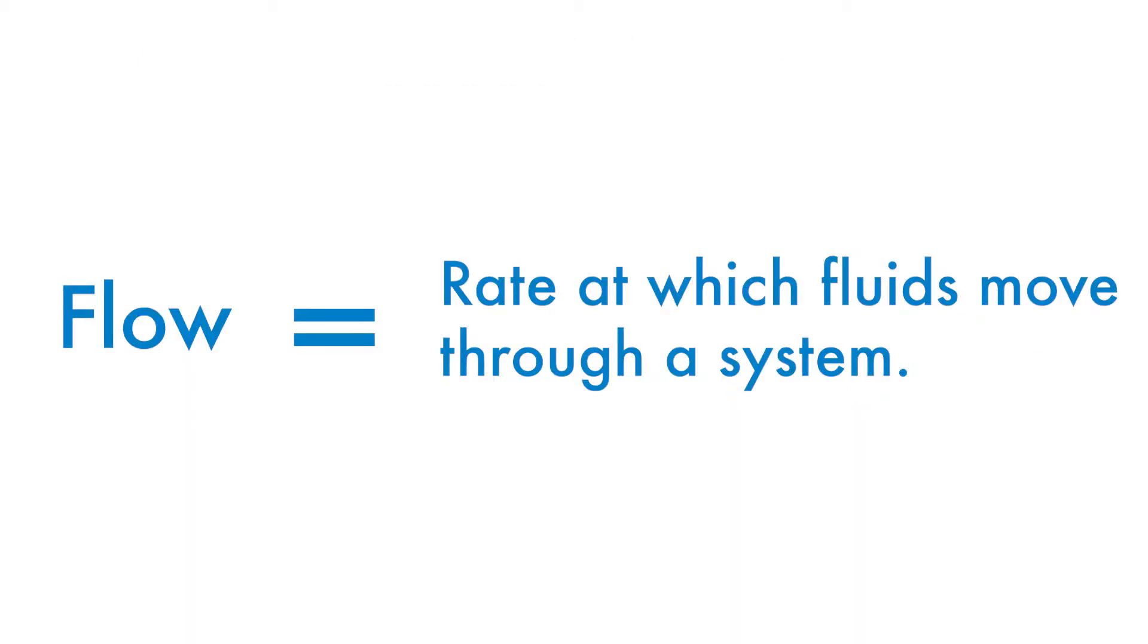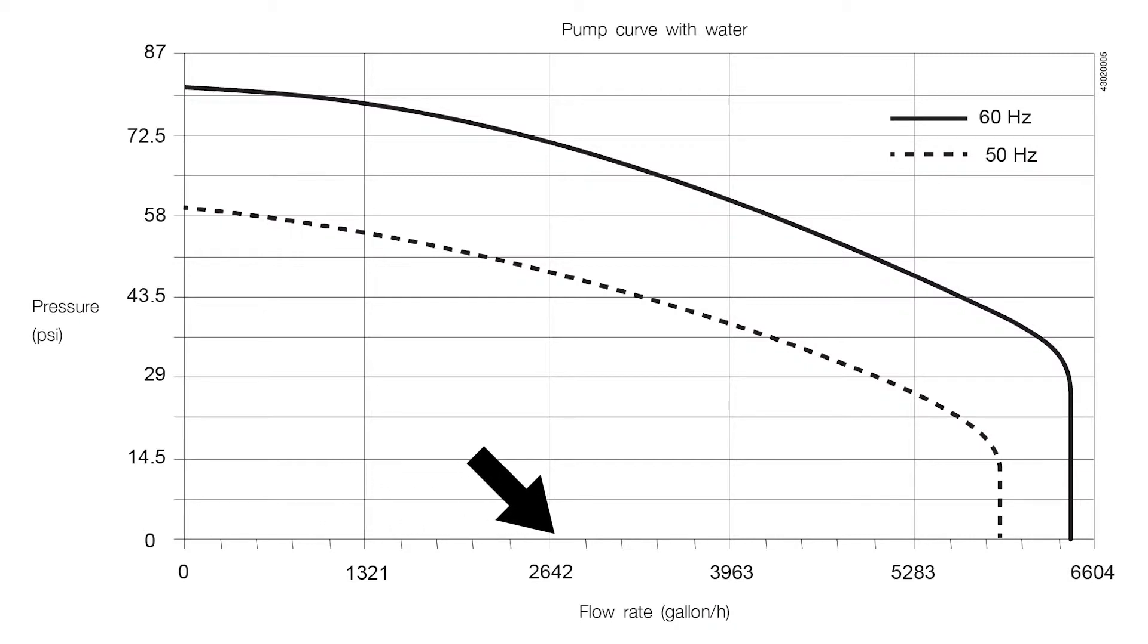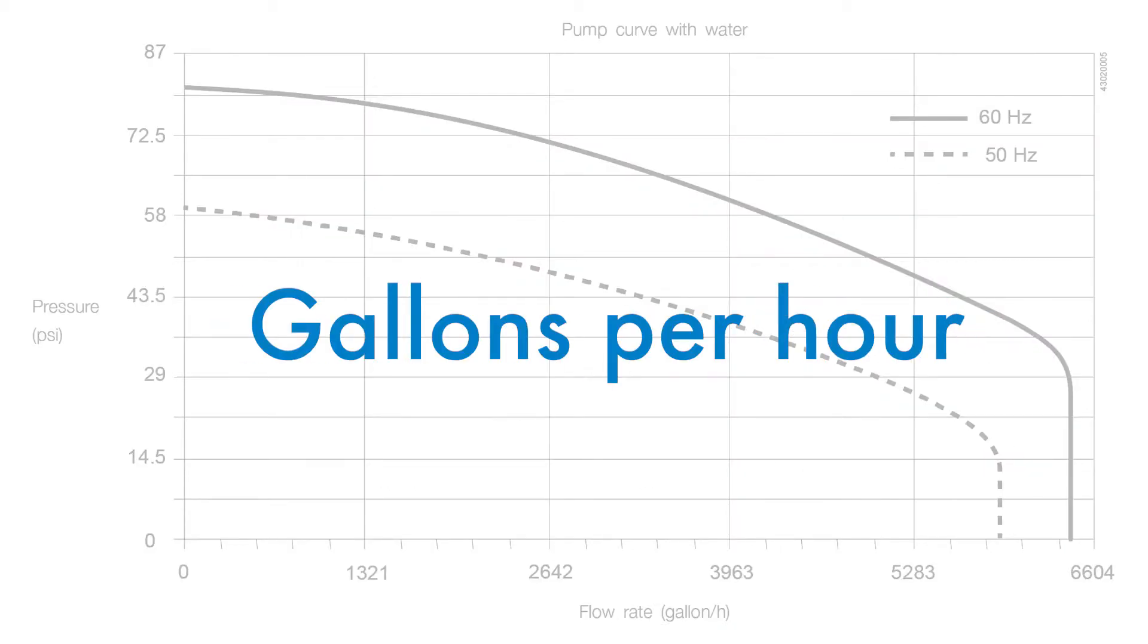Flow rate is the other important specification. It is the rate at which a pump can move a volume of water through a system at a given pressure. Flow is typically indicated on the horizontal axis in units like gallons per minute or gallons per hour.